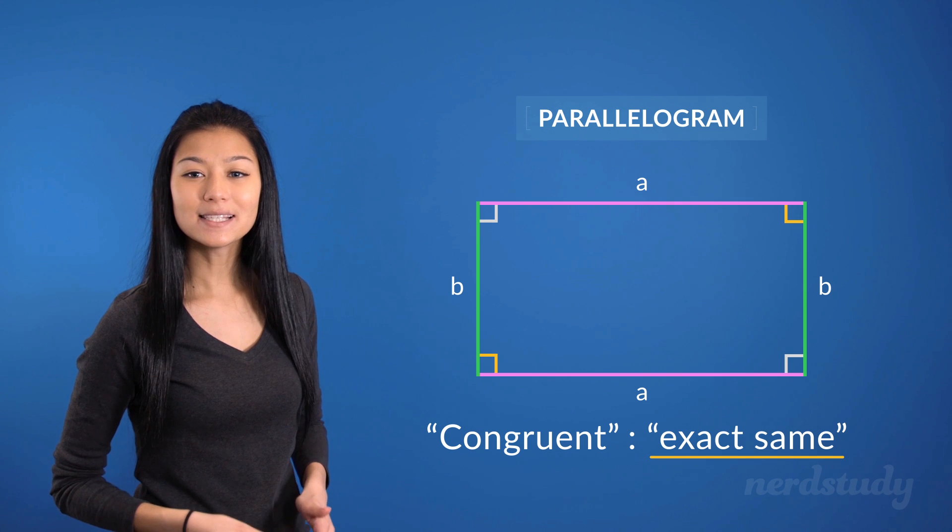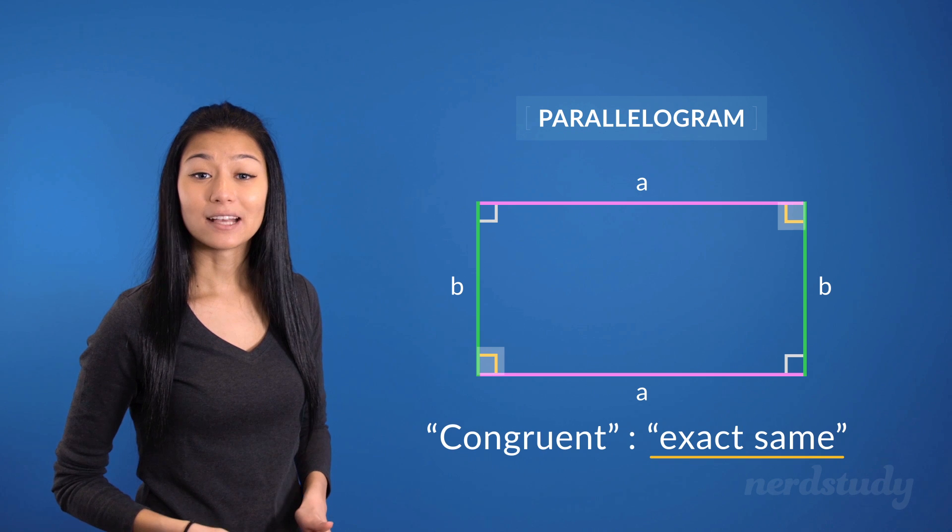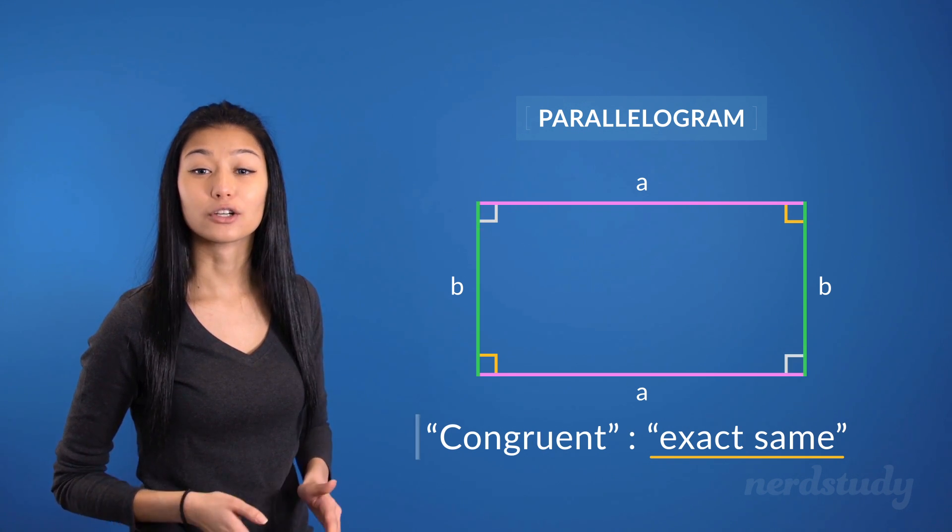So, we could instead say that a parallelogram has opposite sides that are congruent in length, and angles diagonally across each other that are congruent as well.